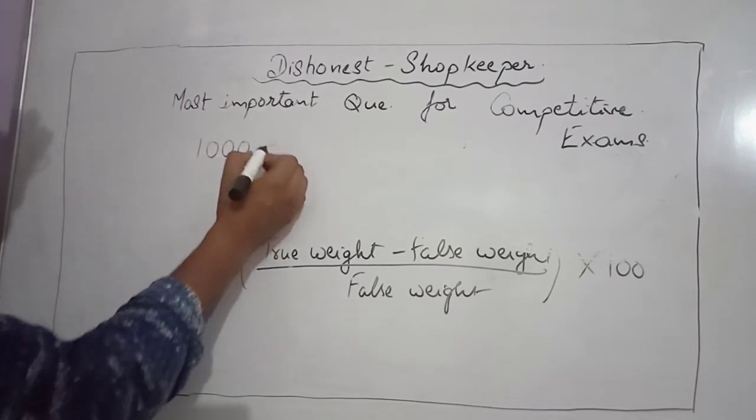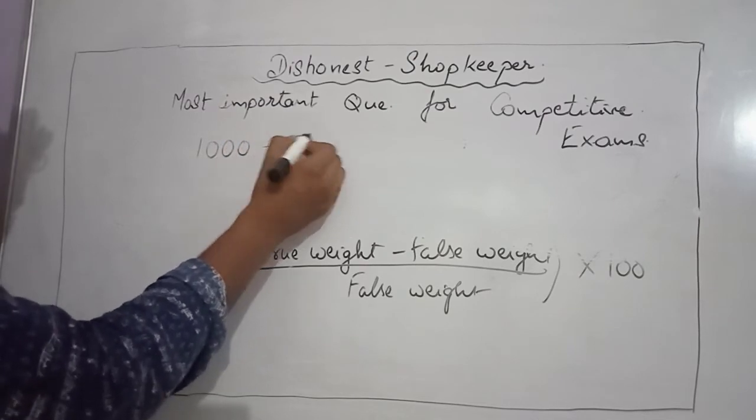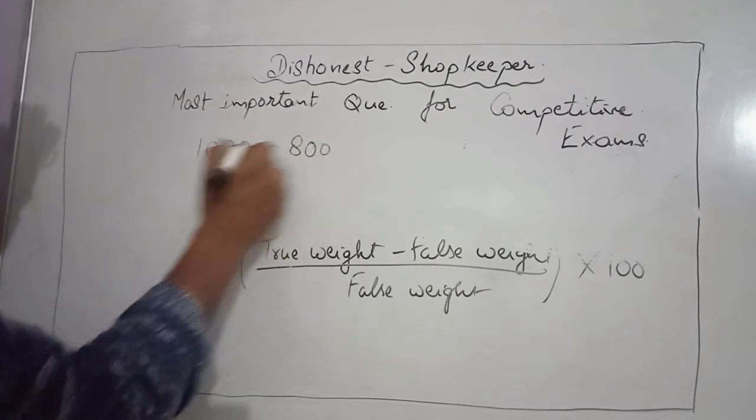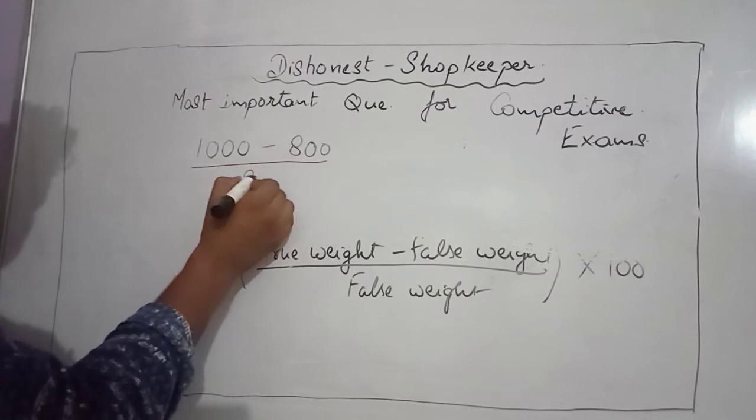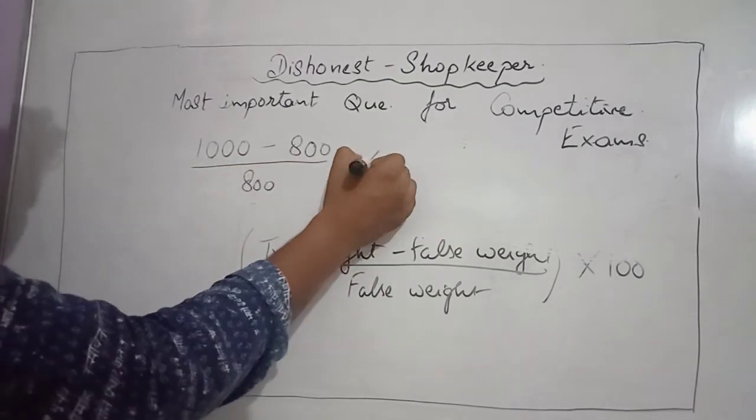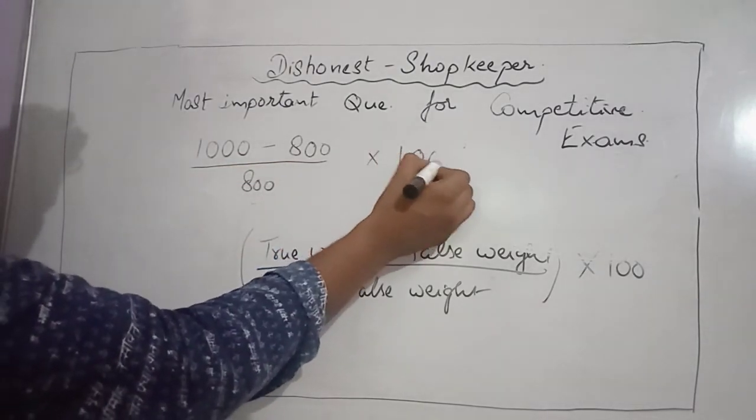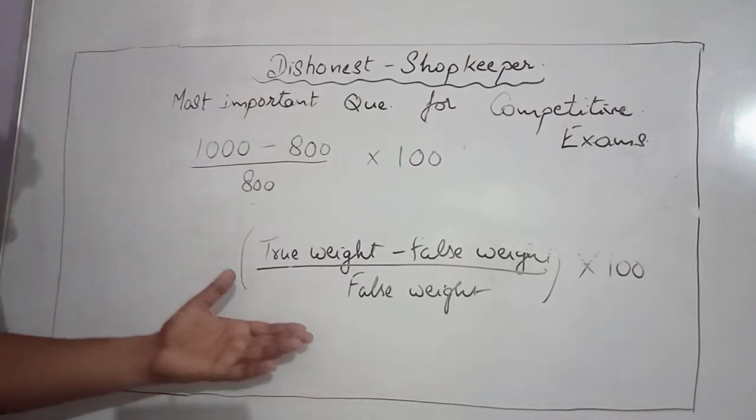The false weight that the shopkeeper used was 800 grams. So we multiply by 100 as per the formula.